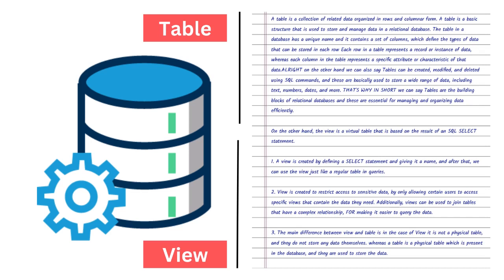In SQL, a view is a virtual table based on the result of an SQL SELECT statement. It is a way of representing data from one or more tables in a particular format without changing the underlying data. A view is created to restrict access to sensitive data by only allowing certain users to access specific views containing the data they need. Additionally, views can be used to join tables that have complex relationships, making it easier to query data.